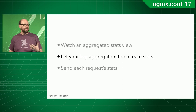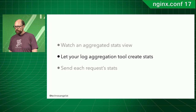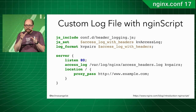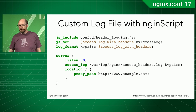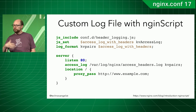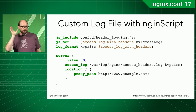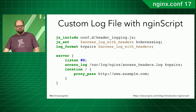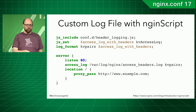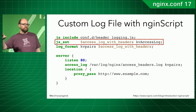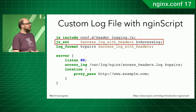Let's go back to the log aggregation tool approach — letting your log aggregation tool create your stats. Here's something you can do with NginScript: create a custom log file. In the Nginx configuration file there are two important commands: JS_include, which includes a JavaScript/NginScript file, and JS_set, which takes a function from that file and stores its output into an Nginx configuration variable. So I'm doing JS_include to include the NginScript file, then setting a variable using a KV access log function from header_logging.js — KV meaning key-value — saving the output into an 'access_log_with_headers' variable.